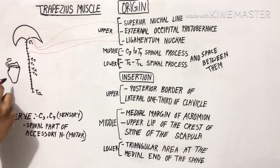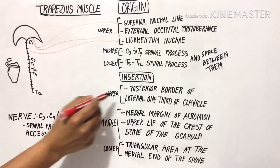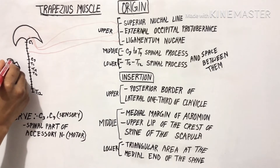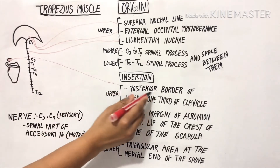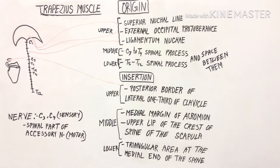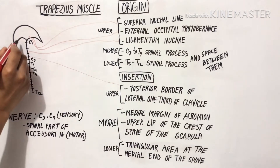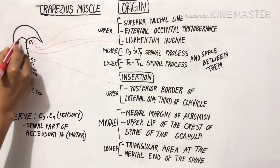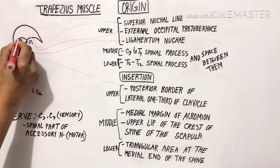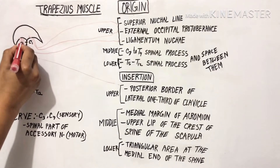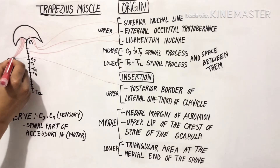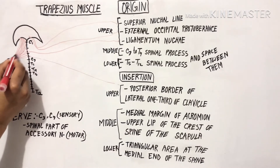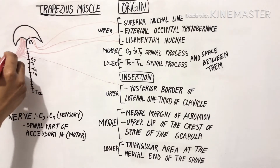The upper part is inserted into the posterior border of the lateral one-third of the clavicle. The fibers run downward, so these are also called descending fibers. These are our upper fibers or descending fibers.